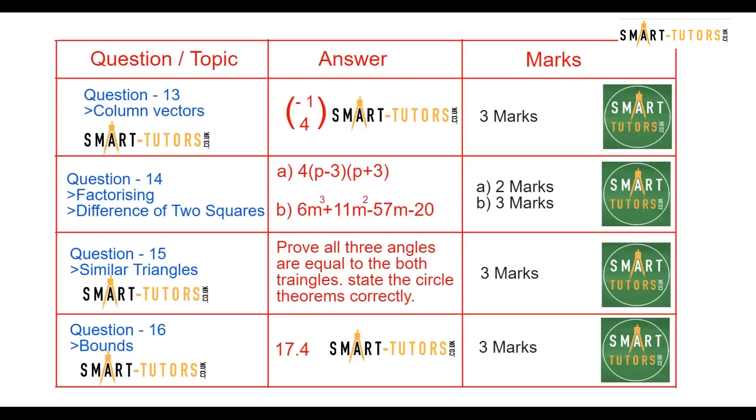Question number 14. Factorizing together with the combined with difference of two squares. The correct answer is 4p minus 3p plus 3. Having said that, there's a B part question. Expanding triple brackets. So expanding triple brackets answer is 6m cubed plus 11m squared minus 57m minus 20.